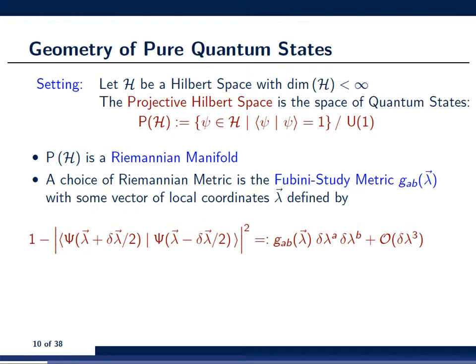Indeed, it turns out that this projective Hilbert space is a Riemannian manifold, and that there is a natural choice of Riemannian metric defined. And this natural choice is called the Fubini-study metric tensor, denoted by g_AB of vector of lambda. And here this vector of lambda denotes what mathematicians would call a local coordinate chart, or what a physicist would call a parametrization of a surface.